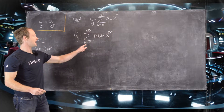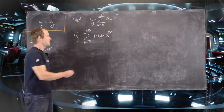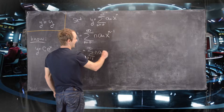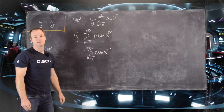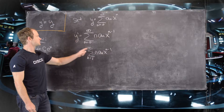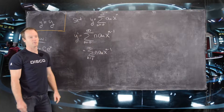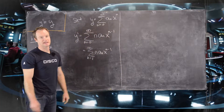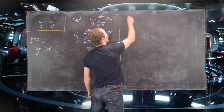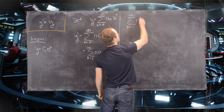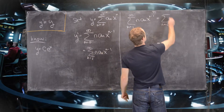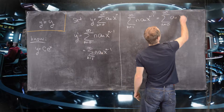The n equals 0 term doesn't really matter, so we can set this as the sum n equals 1 to infinity of n times a sub n times x to the n minus 1, because we have this multiple of 0 there. Now we can set up our differential equation with this value of y prime and this value of y. If this is a solution to the differential equation, then we get the equality: the sum n equals 1 to infinity of n times a sub n times x to the n minus 1 equals the sum n equals 0 to infinity of a sub n times x to the n.